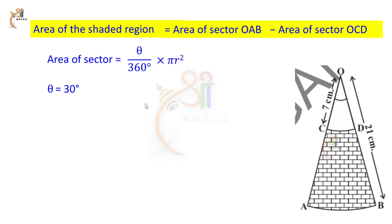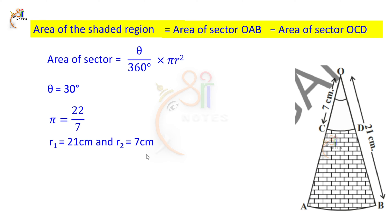In the question, the 30 degrees angle sector is identified. Pi value is 22 by 7. We have two radii: from O to B it is 21 centimeters, and from O to D (or O to C) it is 7 centimeters. So R1 = 21 centimeters and R2 = 7 centimeters.